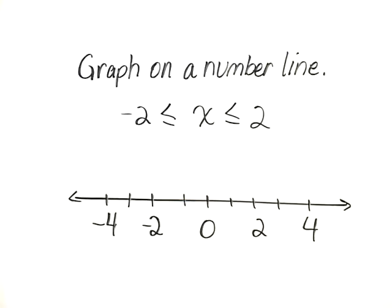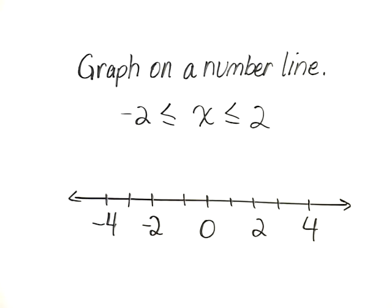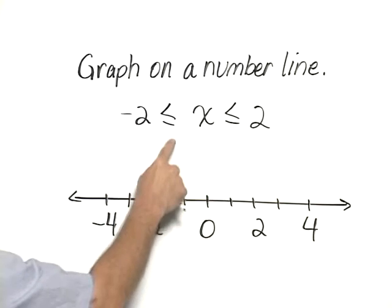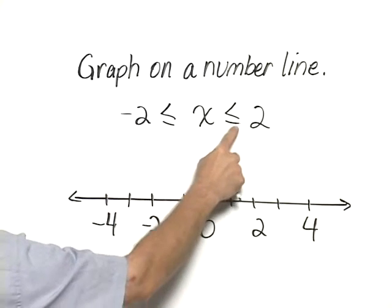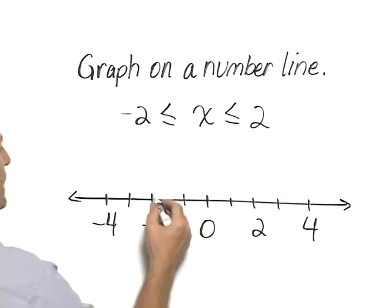Graph on a number line: negative 2 is less than or equal to x, which is less than or equal to 2. That means x has to be between negative 2 and positive 2, because the inequality symbols both have an equality to them.